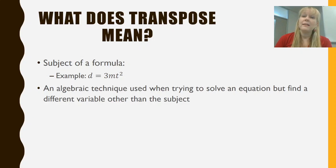Now transposing is an algebraic technique that we use when we're trying to solve an equation but we need to find a different variable than the subject. So in this particular formula we've got d sitting on one side and if we were to substitute m and t into the equation with real numbers we'd be able to find the value of d. But sometimes we might want to rearrange that particular equation and maybe have m as the subject sitting all by itself so that we could find the value of m if we were given d and t. Alternatively we might want to find t so we would need to move the 3 and the m away from the t as well as the squared component of t so that we could find that value if we knew what d and m were.